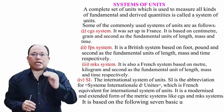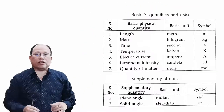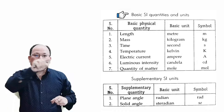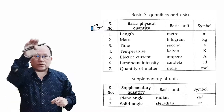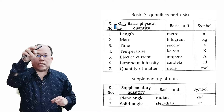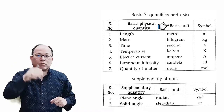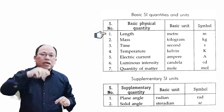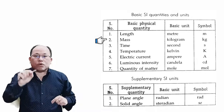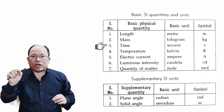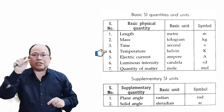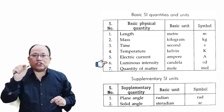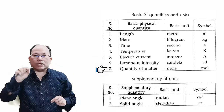Let's come to Table 1: Basic SI Quantities and Units. The columns are serial number, basic physical quantity, basic unit, and symbol. First: length — meter — symbol M. Second: mass — kilogram — kg. Third: time — second — S. Fourth: temperature — kelvin — K. Fifth: electric current — ampere — A. Sixth: luminous intensity — candela — Cd. Seventh: quantity of matter — mole — mol.